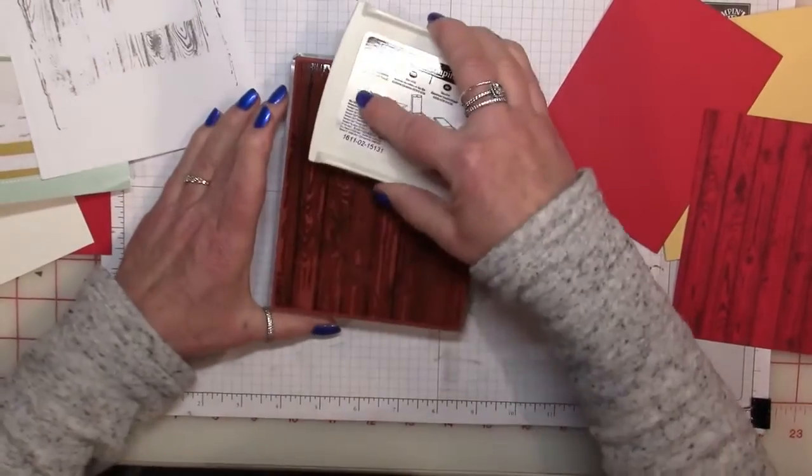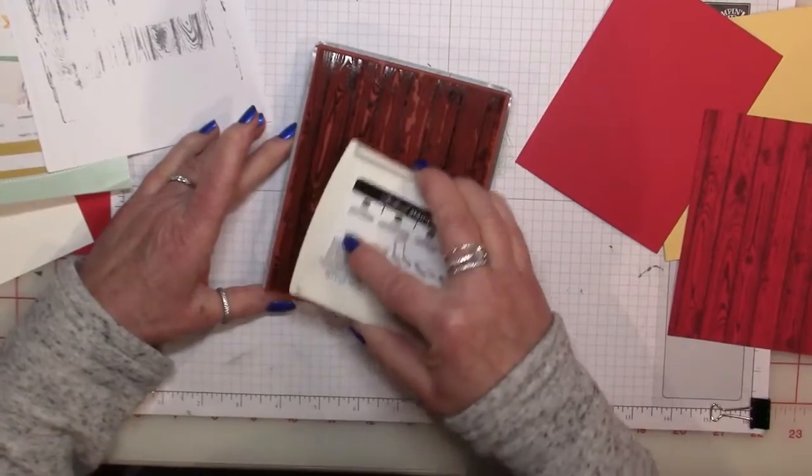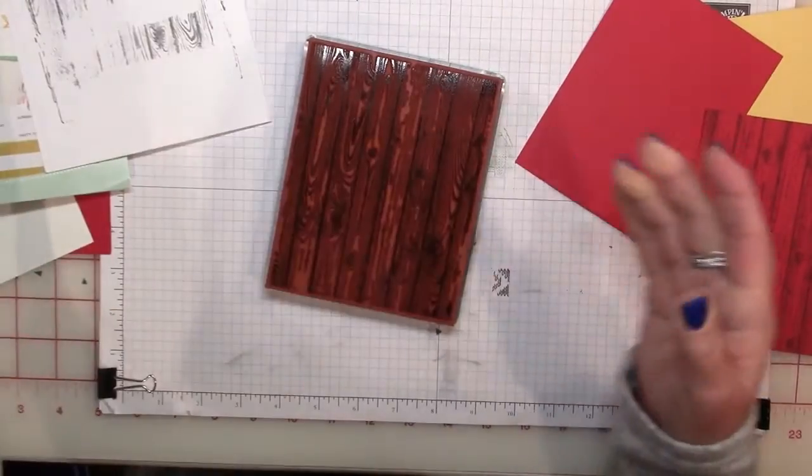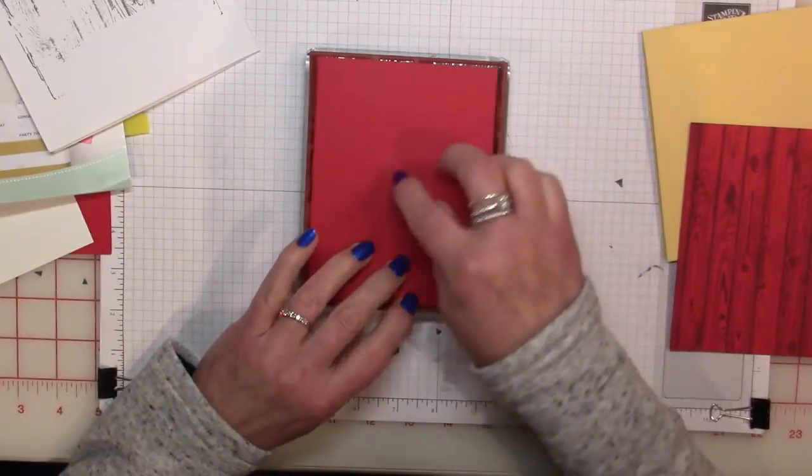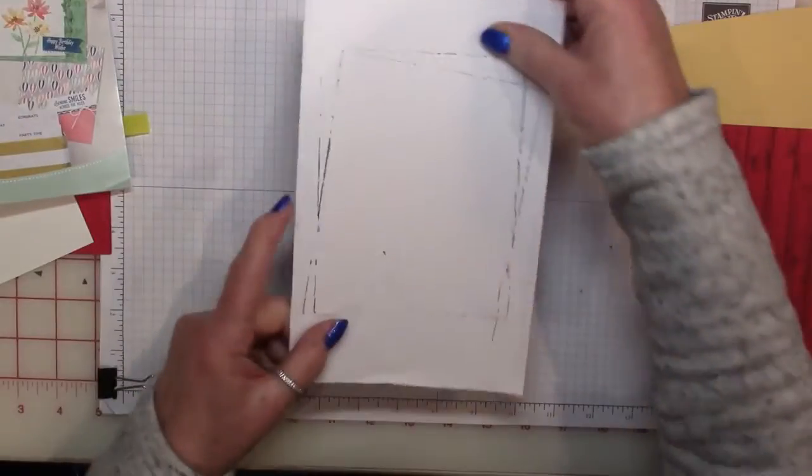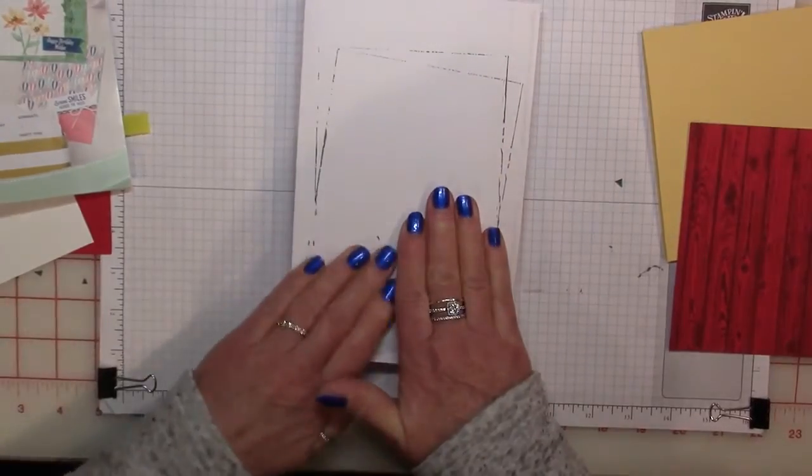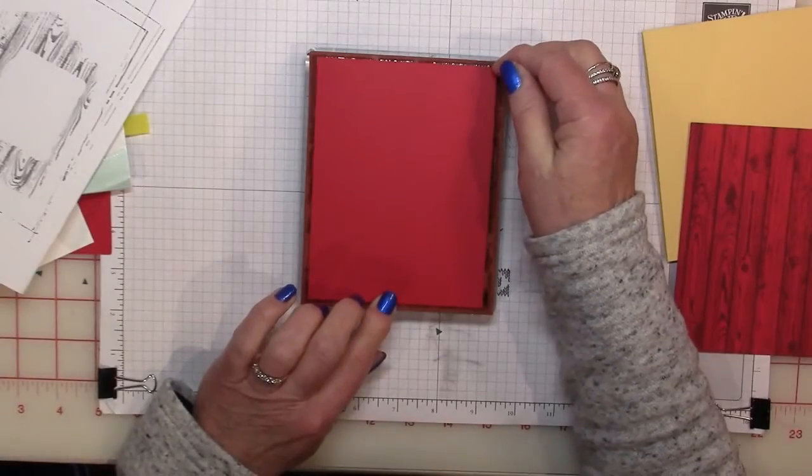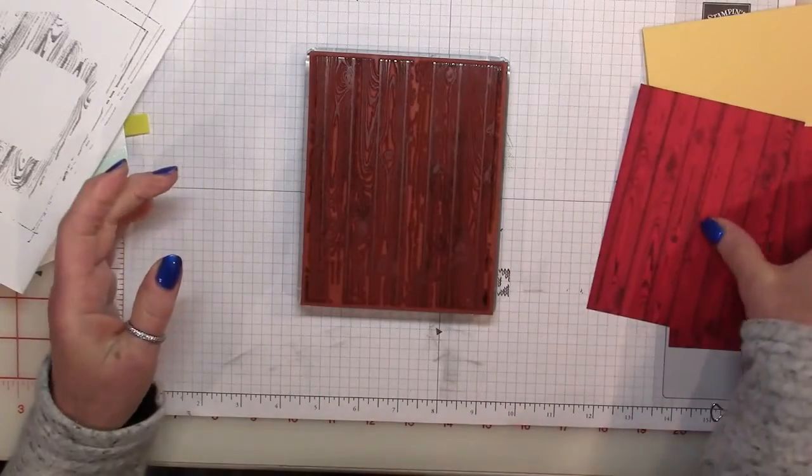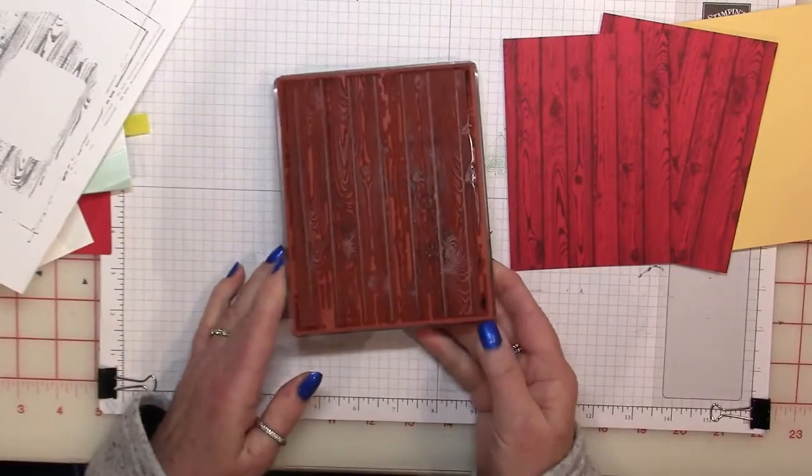There we go. Two sides. And we'll ink it up one more time. And we'll do the second piece. There we go. Next step is we're going to cut these into all the pieces that we need. So I'm going to bring over my stamp and trimmer.